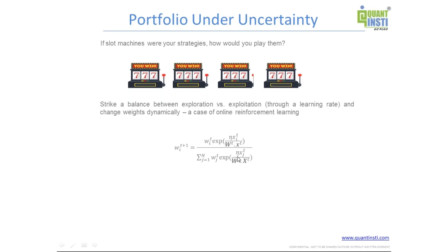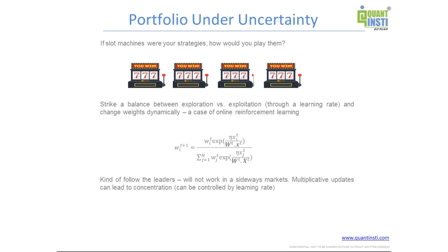No-regret is a very succinct way of solving this problem by doing some sort of exponential weighting. The weight we see here is the same thing as capital allocation. We use a rate called ETA — the letter that looks like N — which is called a learning rate, using which we change the weights based on the most recent performance. This makes us balance between exploitation and exploration.